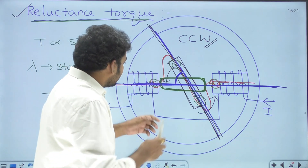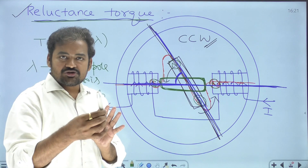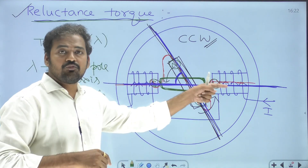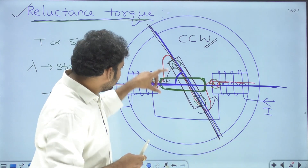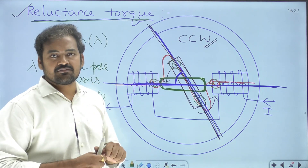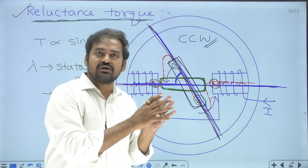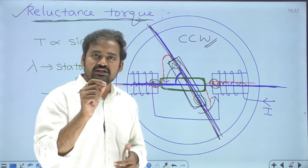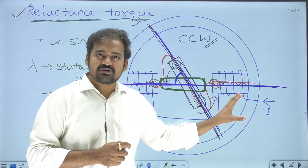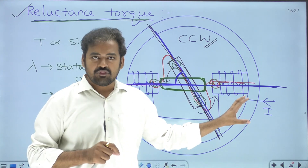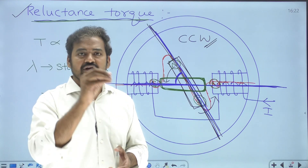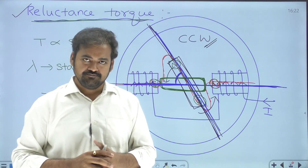To create a reluctance torque, a finite angle is required between the stator pole axis and rotor pole axis. Because of the attractive force, the rotor starts to rotate. This torque is what we call reluctance torque in electrical machines, and this principle is used for a variable reluctance type stepper motor.